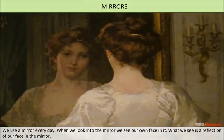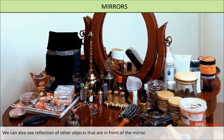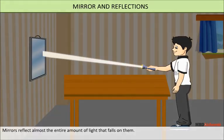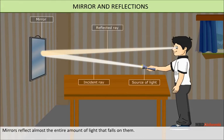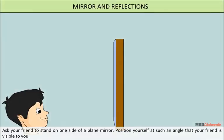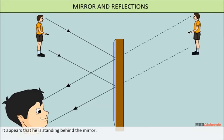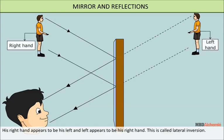Mirrors. We use a mirror every day. When we look into the mirror, we see our own face in it. What we see is a reflection of our face in the mirror. We can also see the reflection of other objects that are in front of the mirror, and we can see reflection of objects like trees and buildings in the water of a pond or a lake too. Mirrors reflect almost the entire amount of light that falls on them. Ask your friend to stand on one side of a plain mirror. Position yourself at such an angle that your friend is visible to you. It appears that he is standing behind the mirror. His right hand appears to be his left hand and his left hand appears to be his right hand. This is called lateral inversion.